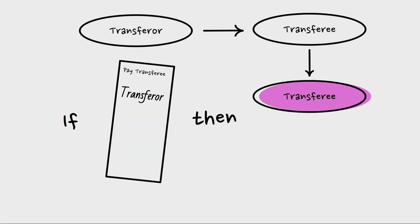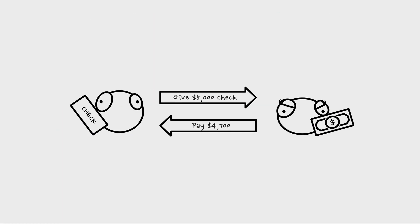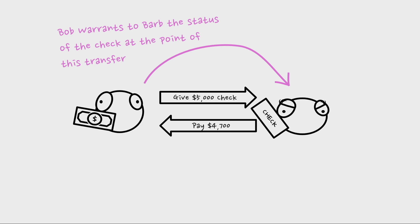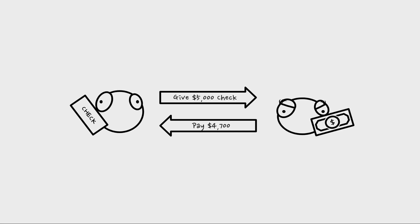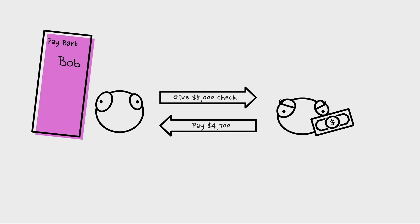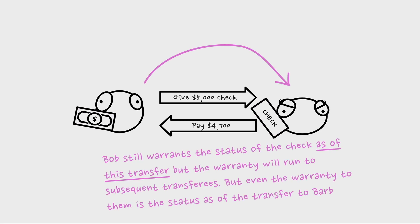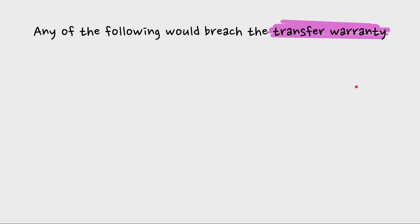So the warranty runs potentially on and on, but only covers the status at the time of the transferor's transfer. If Bob endorsed the check, it would run not only to Barb but to any subsequent transferees from Barb — yet it would only be Bob warranting the instrument's status as of his transfer to Barb.